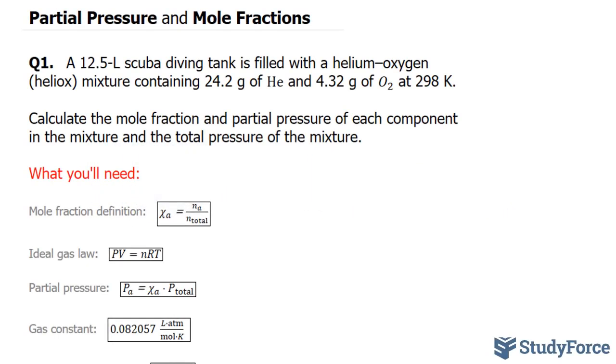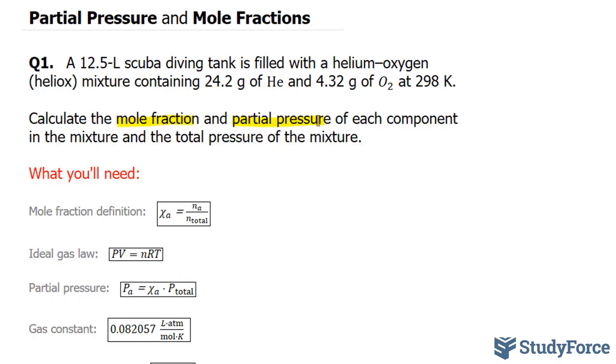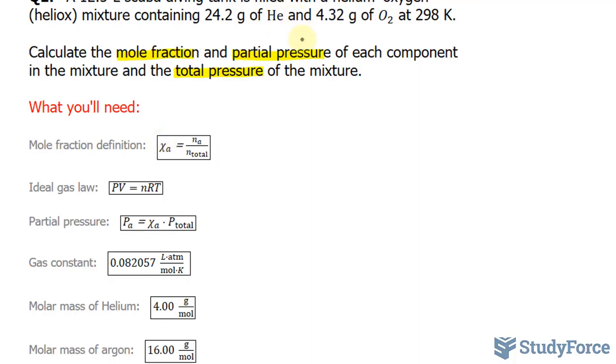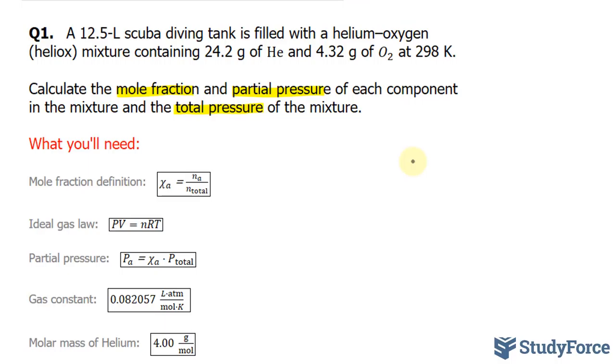In this lesson, I'll show you two examples involving partial pressure and mole fractions. Question 1 reads: a 12.5 liter scuba diving tank is filled with helium-oxygen mixture, which is called heliox, and it contains 24.2 grams of helium and 4.32 grams of oxygen gas at 298 Kelvin. Calculate the mole fraction and the partial pressure of each component in the mixture and the total pressure of the mixture.